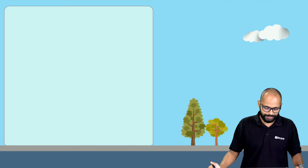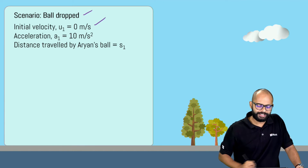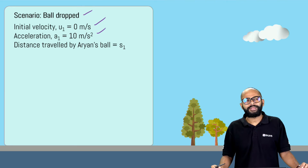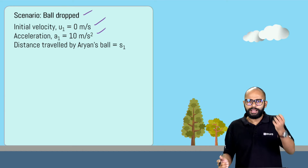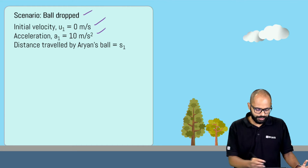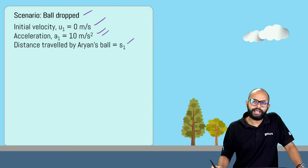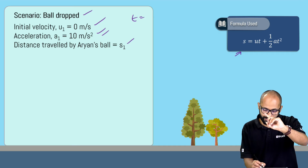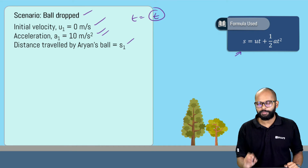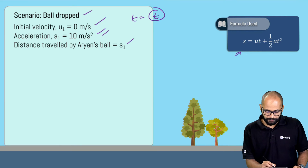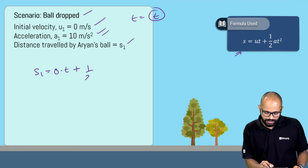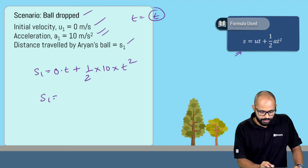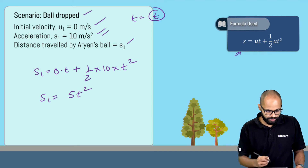Time taken is t for both balls. For the first ball — the ball which is dropped — initial velocity u is 0 meter per second, acceleration a is 10 meter per second squared. Distance traveled by Aryan's ball is s1. Using the equation of motion: s = ut + ½at². Since u is 0, s1 = 0×t + ½×10×t², which gives s1 = 5t².